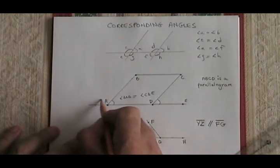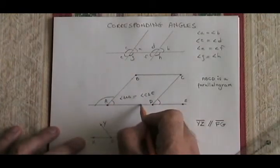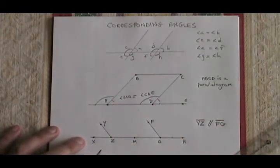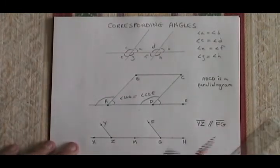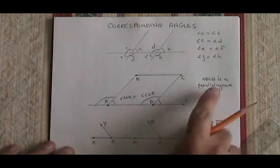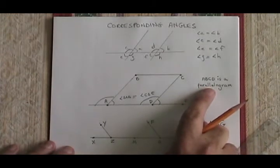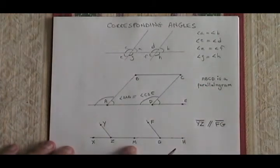It also means that this angle here must be equal to this one here. They are also corresponding. We are justified in coming to these conclusions because we know that ABCD is a parallelogram.